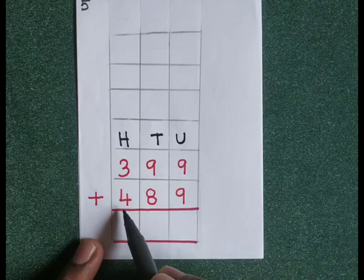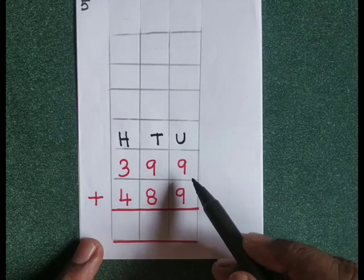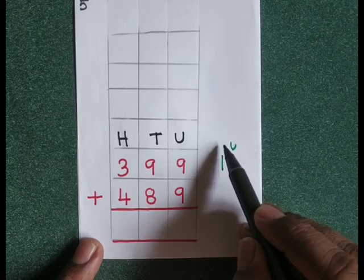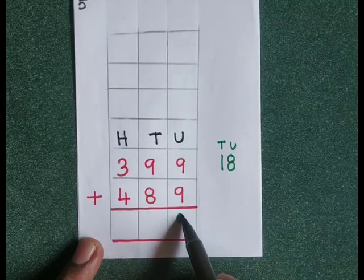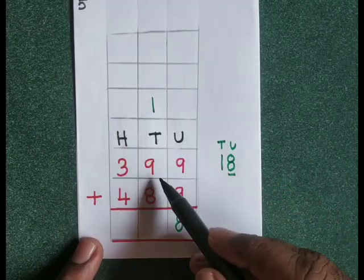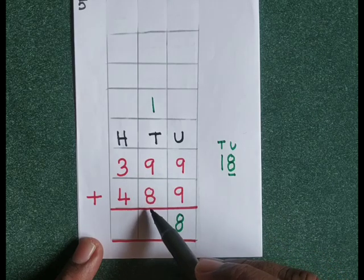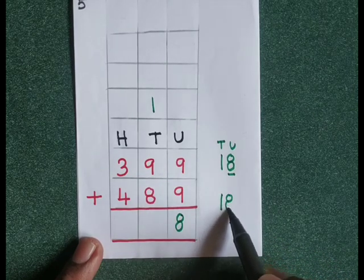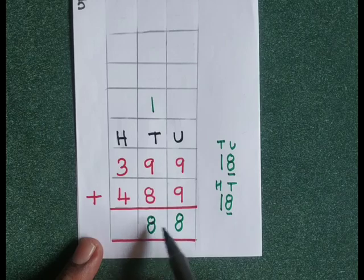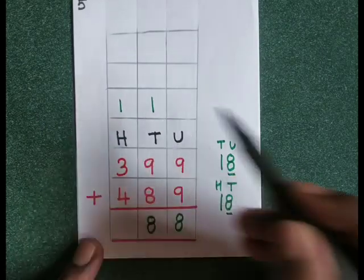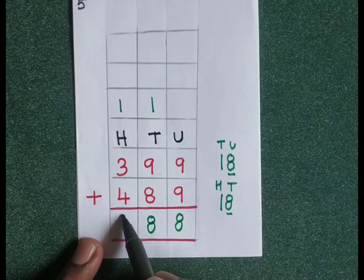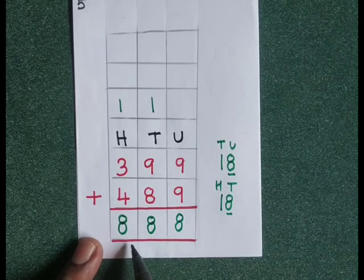399 plus 489. 9 plus 9 is equal to 18. Write 8 at the units place and carry 1 to the tens place. 1 plus 9 is 10, 10 plus 8 is 18. Write 8 at the tens place, carry 1 to the hundreds place. 1 plus 3 is 4, 4 plus 4 is 8. The answer is 888.